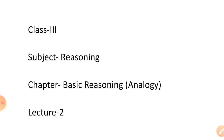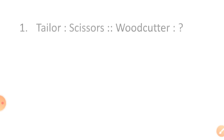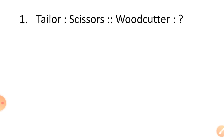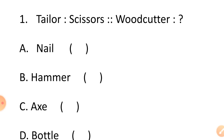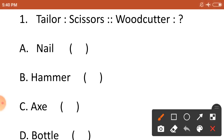Let's start now. First question: tailor is related to scissors in the same manner as woodcutter is related to — option A nail, option B hammer, option C axe, and option D bottle. A tailor uses scissors to cut clothes, and similarly a woodcutter uses an axe to cut wood. So the correct option is option C, axe.